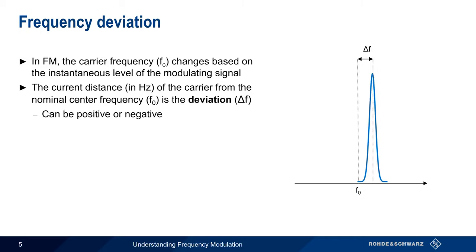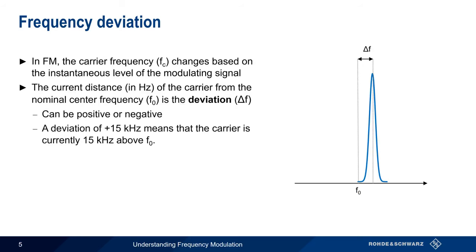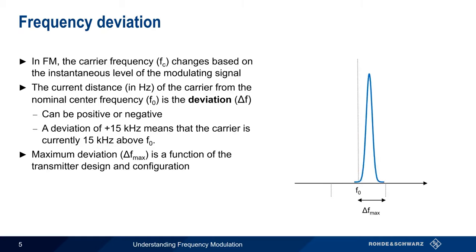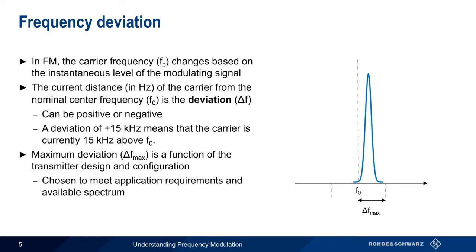This deviation can be either positive or negative. For example, a deviation of 15 kHz means that the carrier is currently 15 kHz above the nominal center frequency. When people talk about the deviation of an FM signal, what they really mean is the maximum deviation of the signal – that is, the maximum distance away from the center. This value is a function of the design and configuration of the transmitter and is chosen to meet the requirements of the application and the amount of available spectrum.